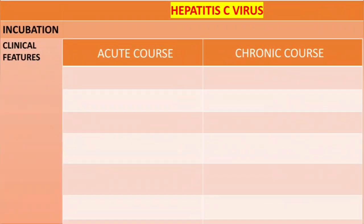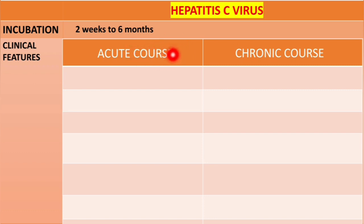Let's talk about the clinical features of Hepatitis C virus. The incubation period is two weeks to six months. There are two types of infections: acute infection and chronic. Acute is when the infection resolves within six months, and chronic is when the infection persists for more than six months.